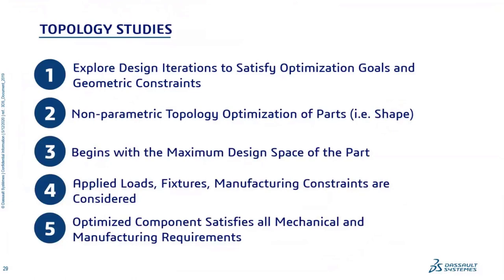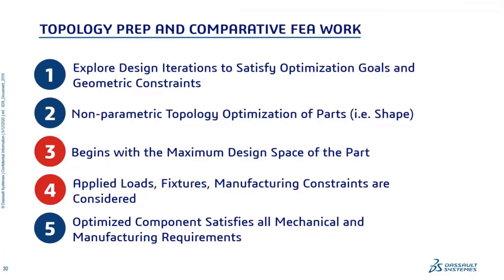We're going to use topology studies to explore design iterations to satisfy optimization goals and geometric constraints. This is a non-parametric optimization of just parts — it means we're focusing on a final shape of a part, not constrained with features. It begins with the maximum design space of a part, takes into account the loads, fixtures, and manufacturing constraints, and ultimately we want to come up with an optimized component that satisfies all of our manufacturing and mechanical requirements. The key questions are: what is a maximum design space for a part, and how do I get the loads that act on the part I want to optimize when that component is part of a larger assembly?